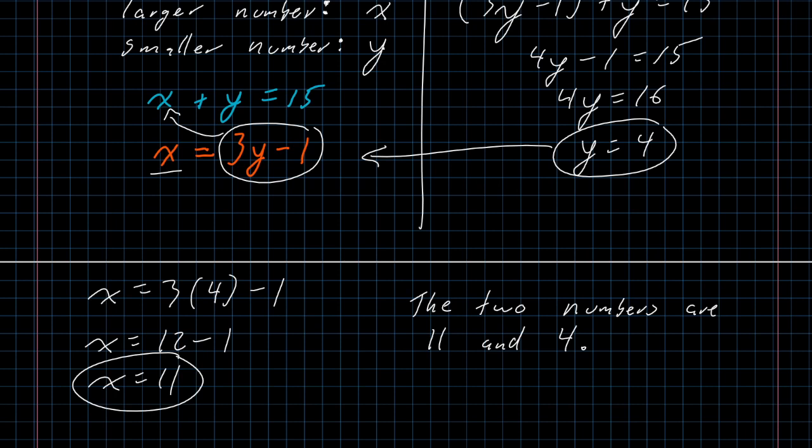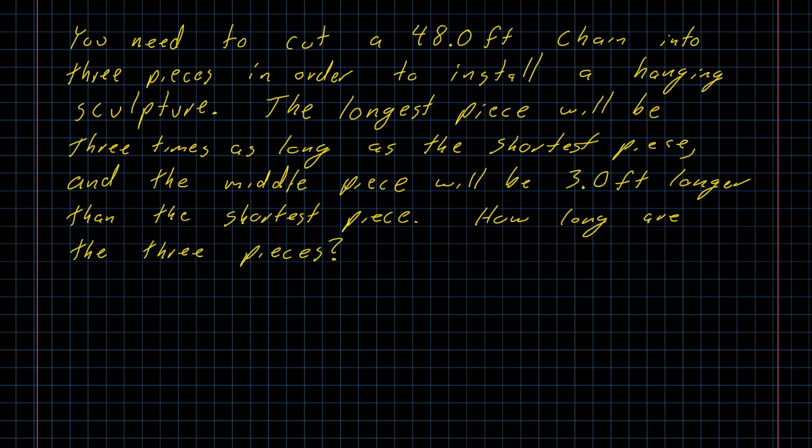Let's take a look at one more example. And here I am going to put something a little bit closer to a practical application. Again, I know this feels more like a scavenger hunt than a practical application, but it will at least let us put some approximate measurements into the situation. You need to cut a 48.0 foot chain into three pieces in order to install a hanging sculpture. The longest piece will be three times as long as the shortest piece, and the middle piece will be 3.0 feet longer than the shortest piece. How long are the three pieces?